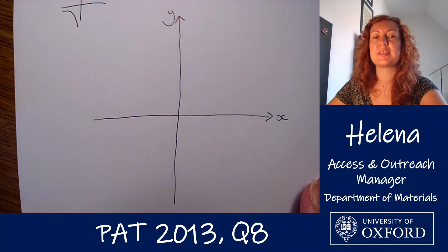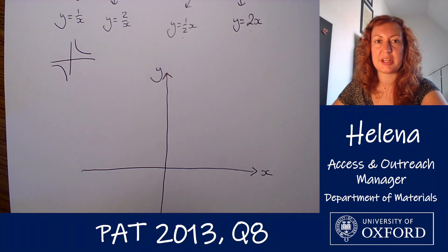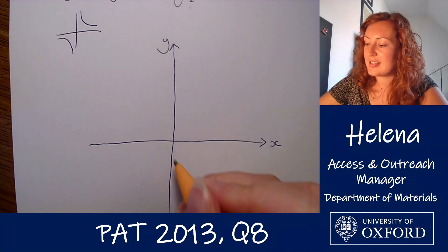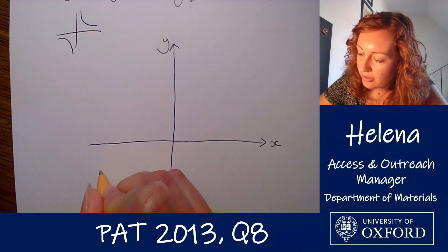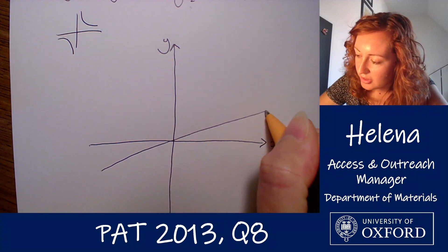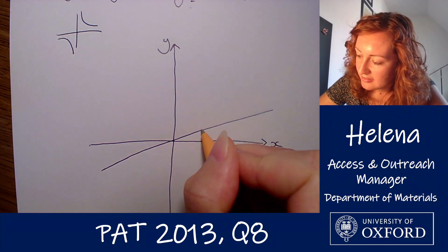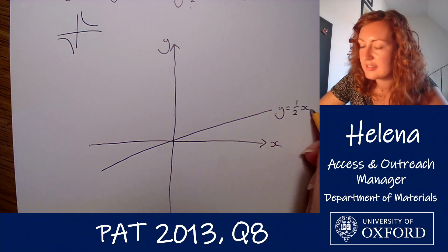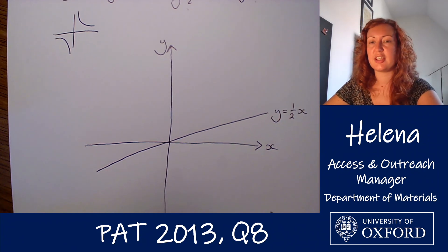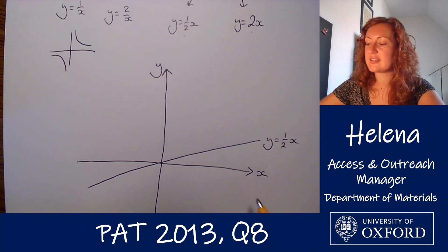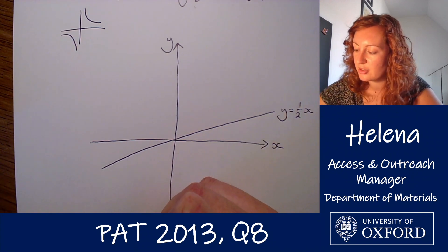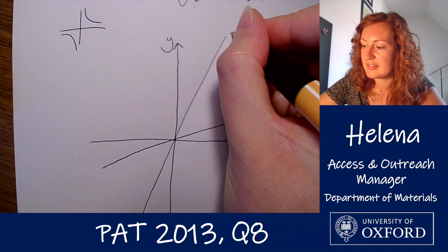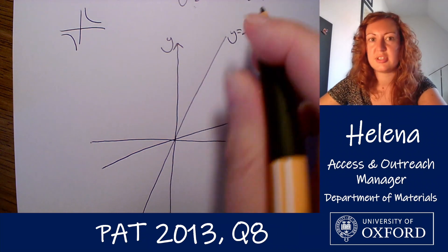I'm going to start with the straight lines first. y = ½x is a straight line going through the origin with quite a shallow gradient. In comparison, y = 2x has a much sharper gradient, also going through the origin.